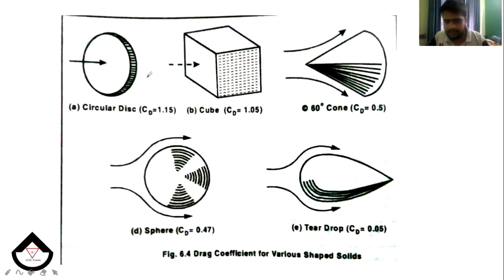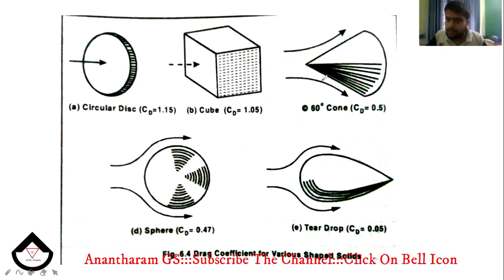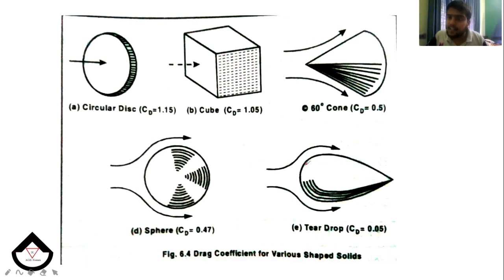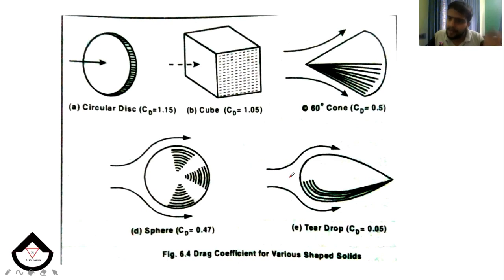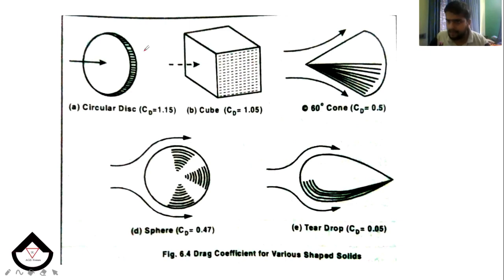Let us compare the CD values for different shapes. For example: 1 is a circular disk, 2 is a cube, 3 is a cone, 4 is a sphere, and 5 is a teardrop. For a circular plate, there is flow separation and vortex formation at the back, giving a high CD value.